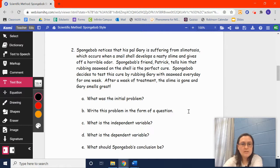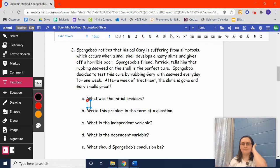Number two, SpongeBob notices that his pal Gary is suffering from slime-atosis, which occurs when a snail shell develops a nasty slime and gives off a horrible odor. SpongeBob's friend Patrick tells him that rubbing seaweed on the shell is the perfect cure. SpongeBob decides to test this cure by rubbing Gary with seaweed every day for one week. After a week of treatment, the slime is gone, and Gary smells great. What's the initial problem? Well, it says that Gary has slime-atosis, and he smells really bad. So, the problem is Gary smells bad.